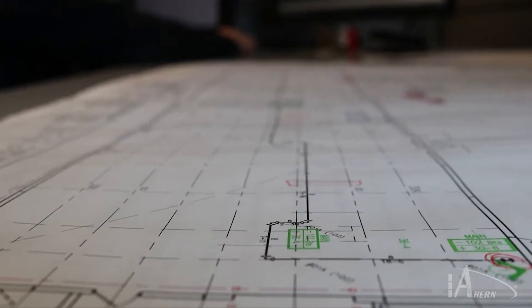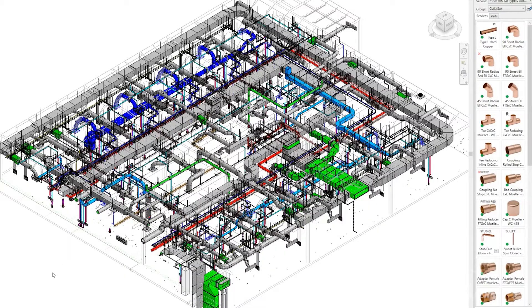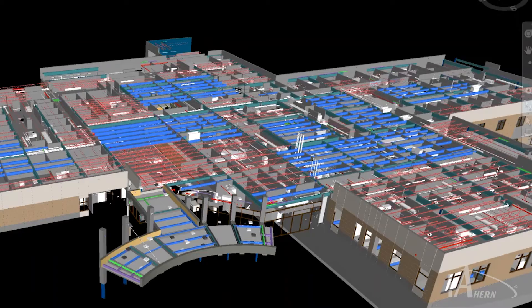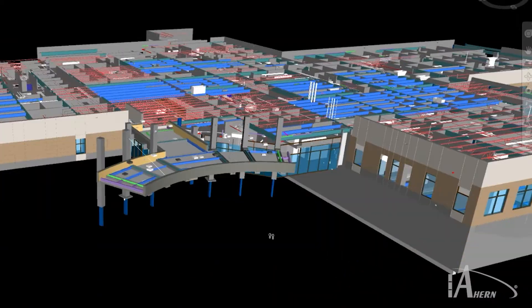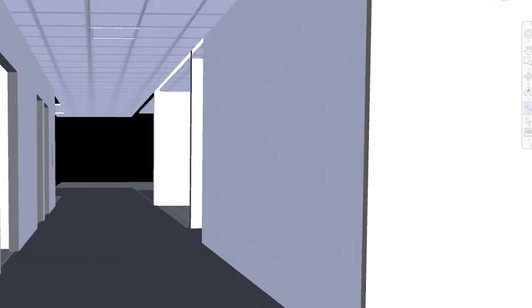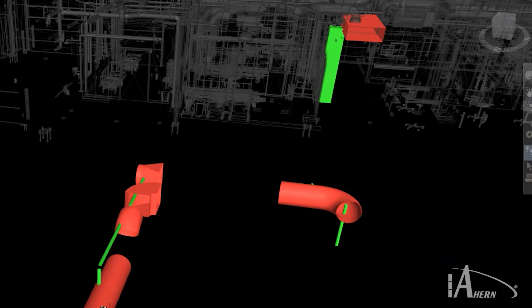After we complete the modeling stage, we then proceed into the coordination phase, which entails ensuring that all the components or elements do not intersect or collide with any other trades. This is most often done through secondary software usage, which allows you to navigate freely throughout the facility, drop in at any portion of the building, and perform clash detection.